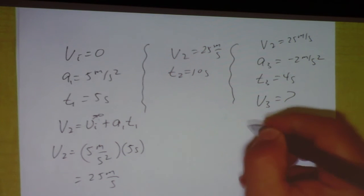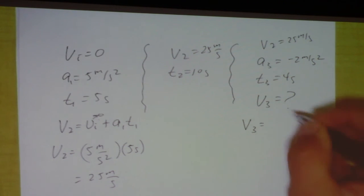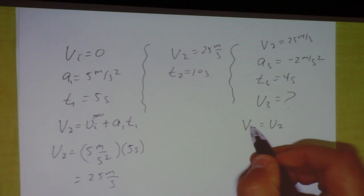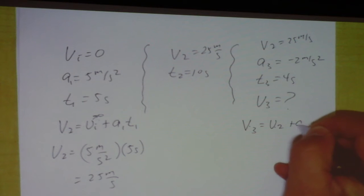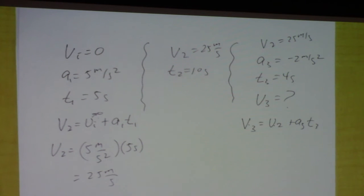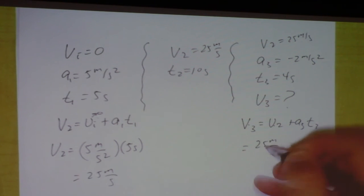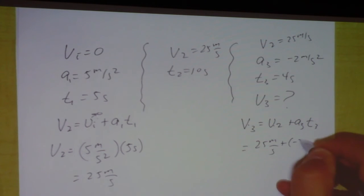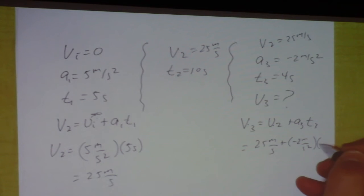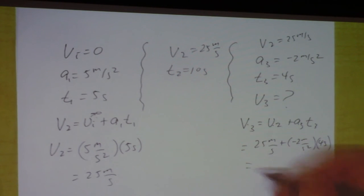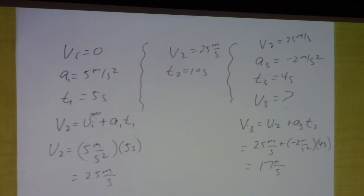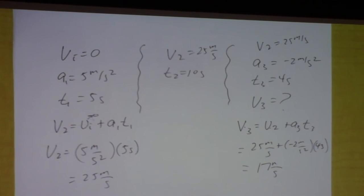So we could do it like this though. V3 equals V2, this is later, this is earlier, plus A3 times T3. Okay, so we start at 25 and then plus negative 2 times 4. I don't really see the answer there. Maybe I'm not doing it right in my head. It should be 17, right? It looks like I goofed up the answers there. Closest one would be 16, but it really should be 17.